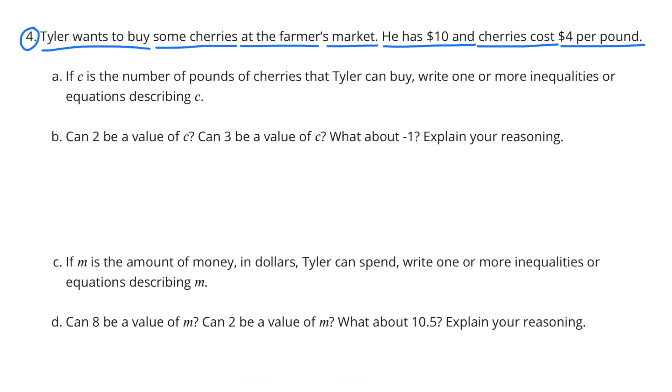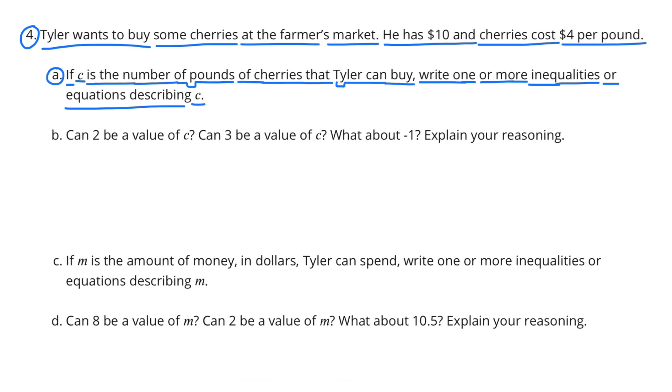Number 4: Tyler wants to buy some cherries at the farmer's market. He has $10, and cherries cost $4 per pound. A. If C is the number of pounds of cherries that Tyler can buy, write one or more inequalities or equations describing C. C is less than or equal to 2 and 5 tenths. C is equal to 2 and 5 tenths. And C is greater than 0.